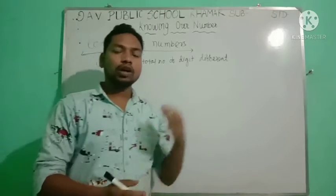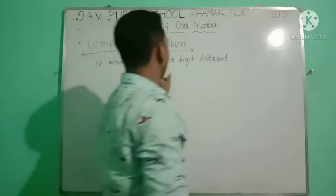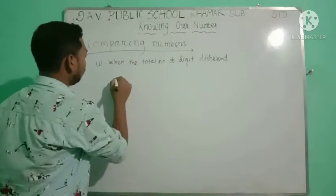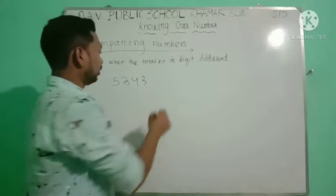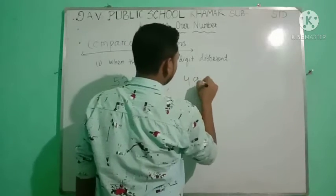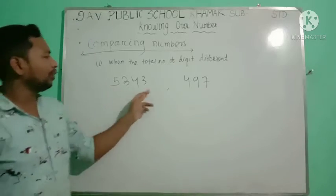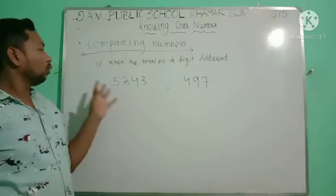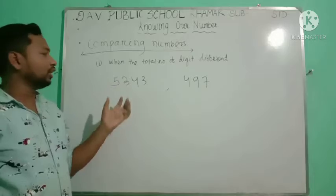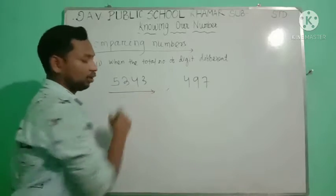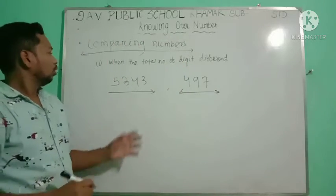Now we are going to compare two numbers. When the total number of digits is different — for example, one number has four digits and another has three digits — the number with more digits is the larger one, and the number with fewer digits is the smaller one.